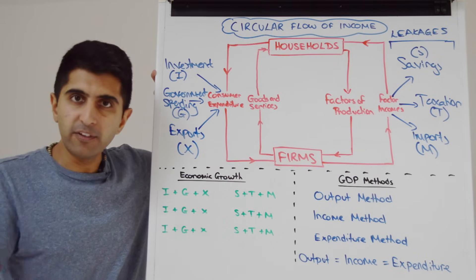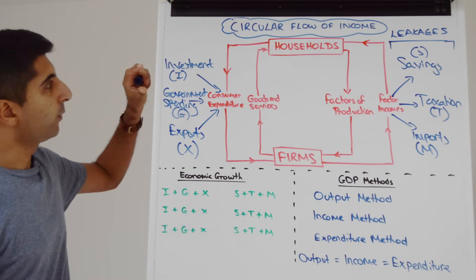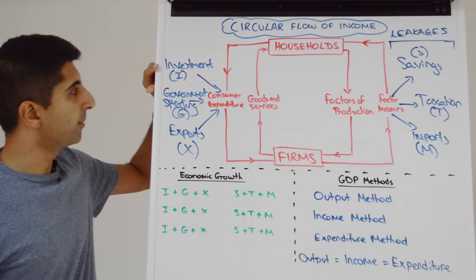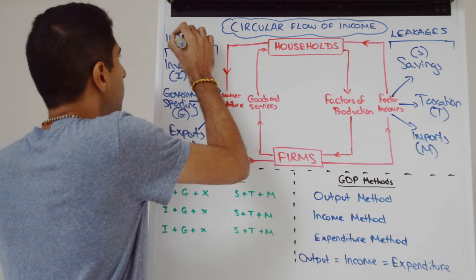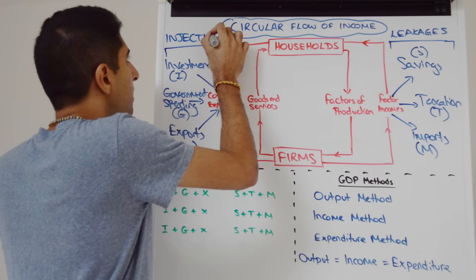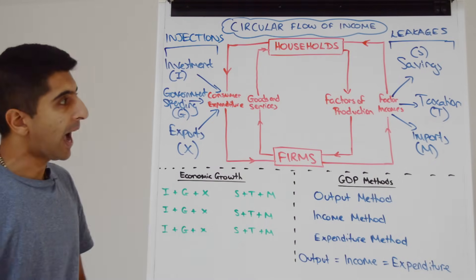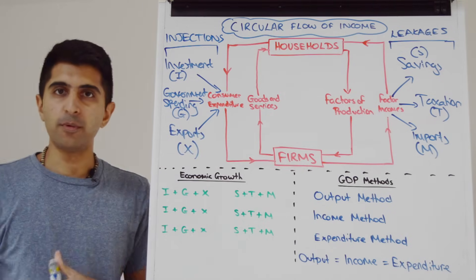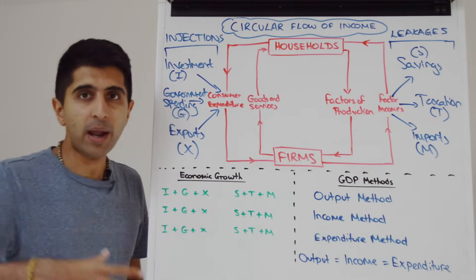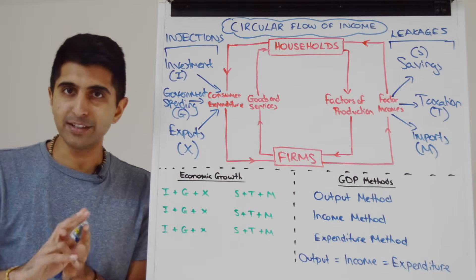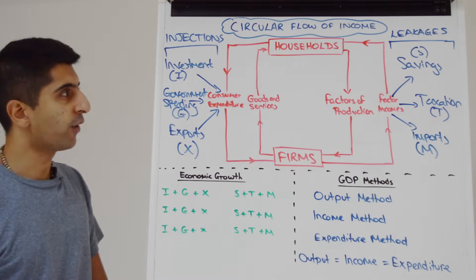So we have investment — the technical definition being when firms spend on capital goods — government spending, and exports. These three are known as injections into the circular flow: ways in which money can enter our economy outside of consumer expenditure. We now have injections and leakages, bringing in both the government and the international sector. This is the four-sector circular flow — a much more realistic view of our economy.